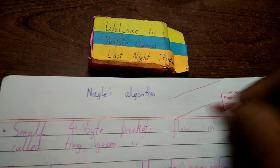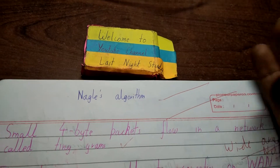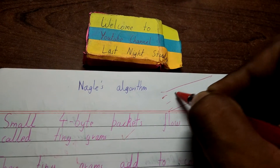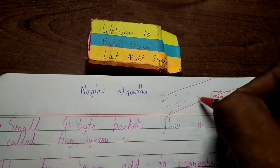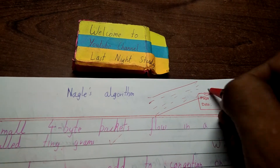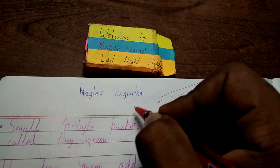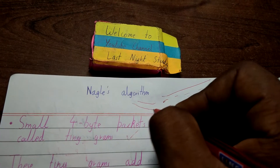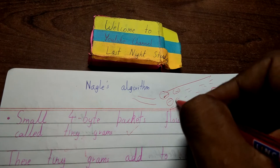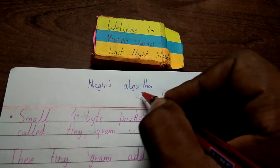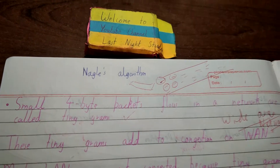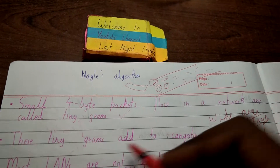Consider a very big wide area network. Tiny grams are like small dots in that large network. So if a large amount of data needs to be shared, these tiny grams will cause congestion — a blockage — due to which the large packet won't be sent at a very fast speed.